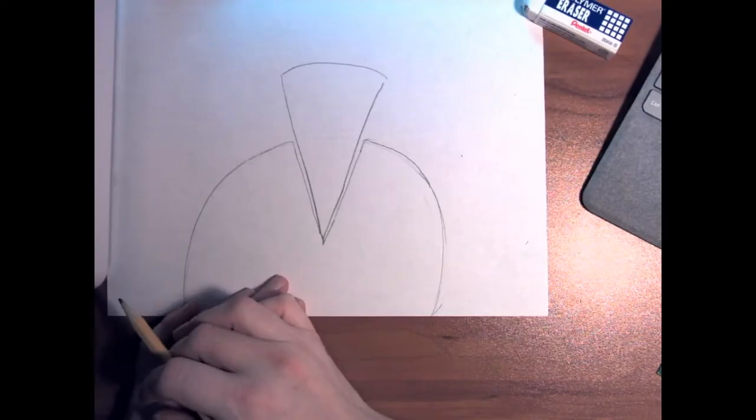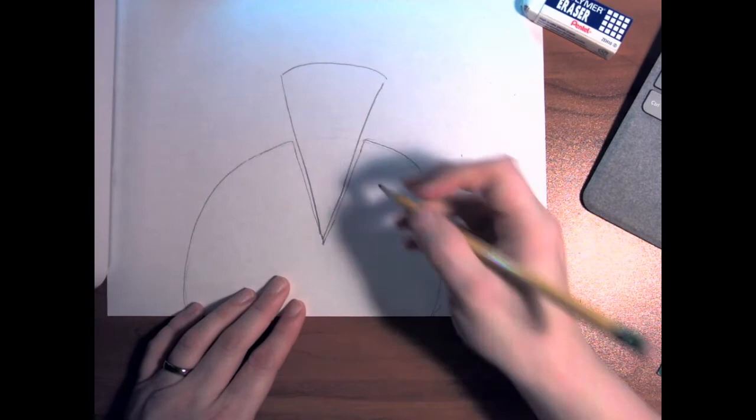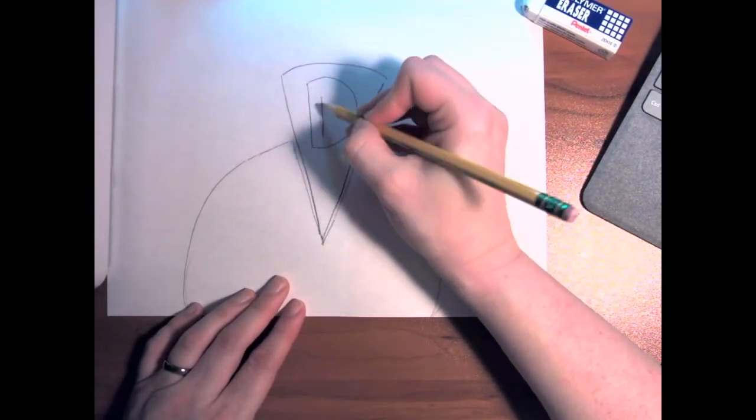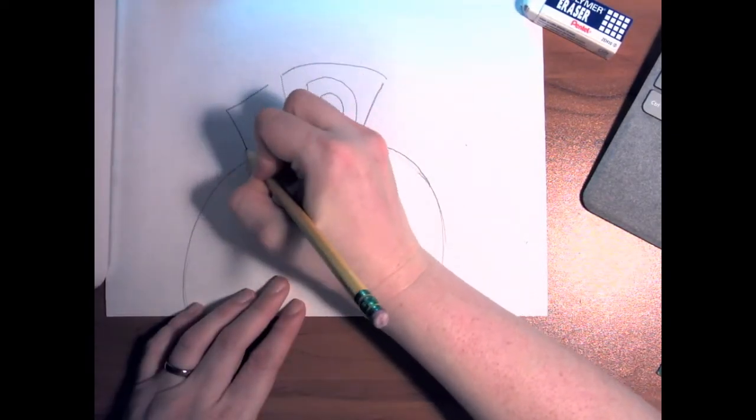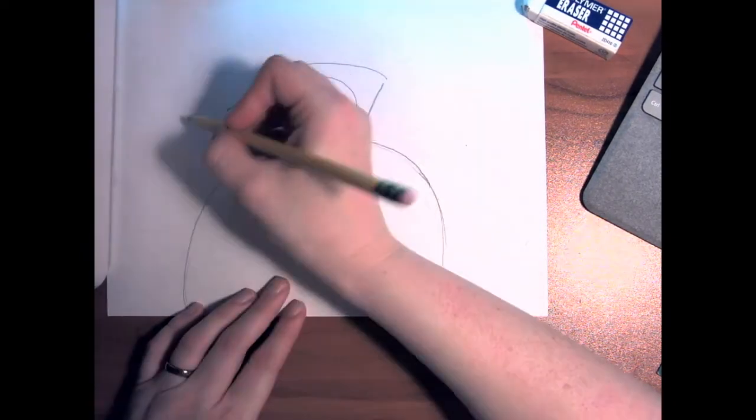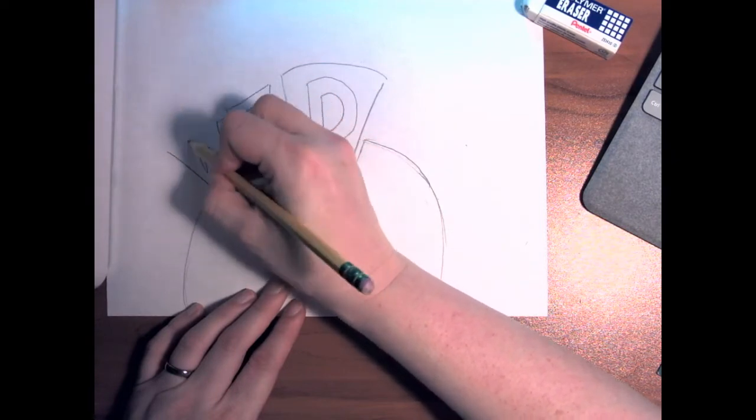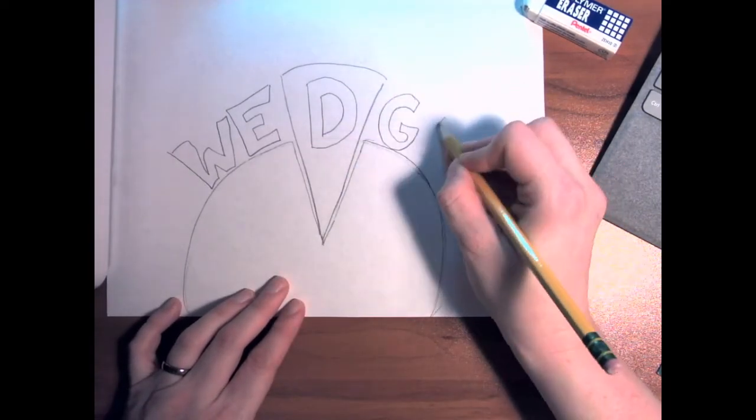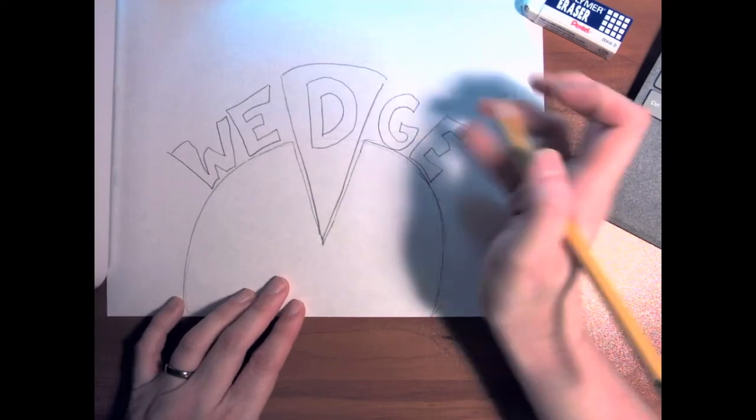Before I go too much further, I do want to add in the word wedge that helps us remember what it is that we're working with. So, since D is the middle of the word, I just went ahead and draw a great big D and I'll do the E. And then on this side. There we go.